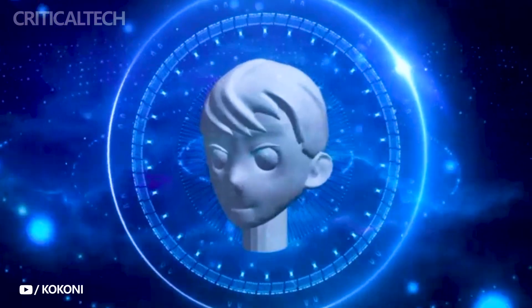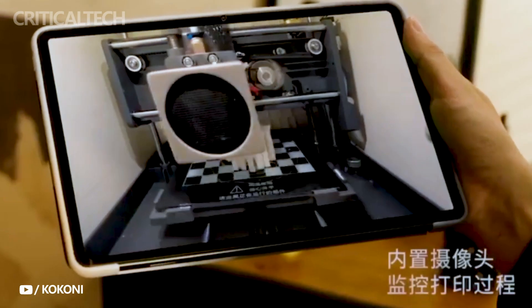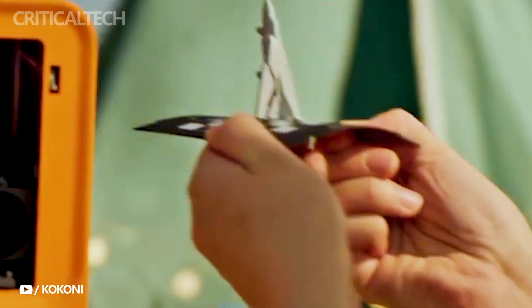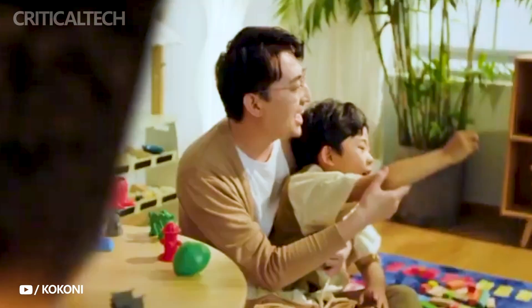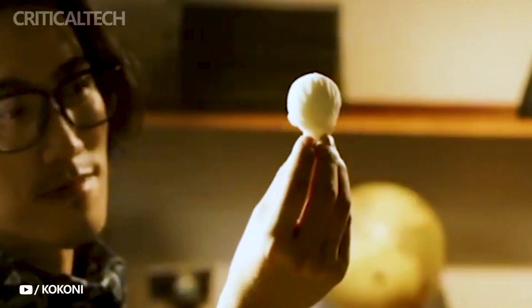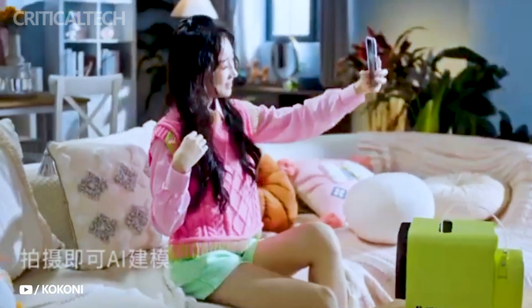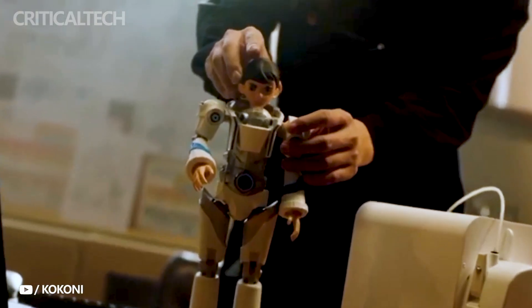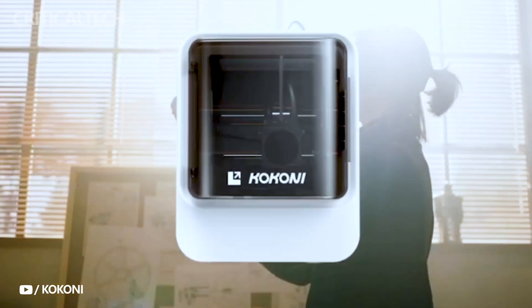The accompanying app extends your creative horizons further with a wide array of free model libraries, spanning various categories and interests. The Kokoni EC2 3D printer ensures compatibility with a range of file formats, including STL, JPG, and PNG. You can effortlessly connect to it via Wi-Fi or Bluetooth, providing even more convenience in managing your printing tasks.